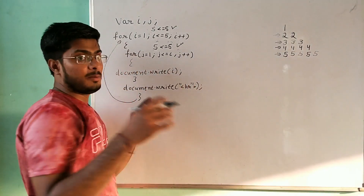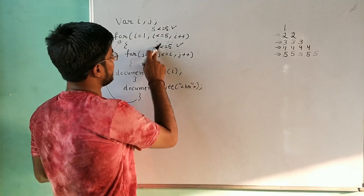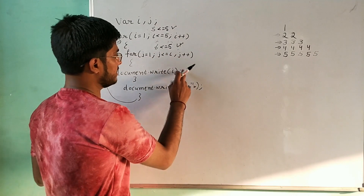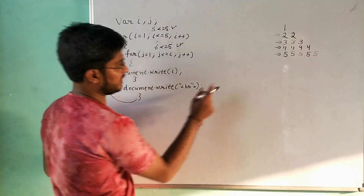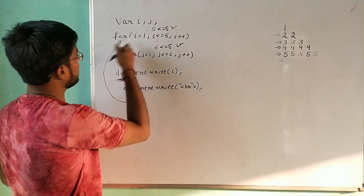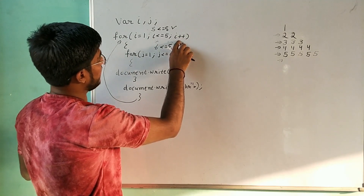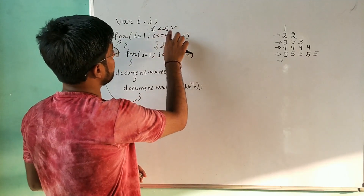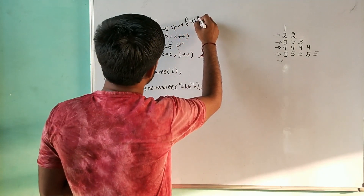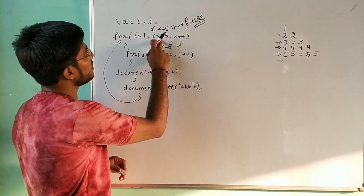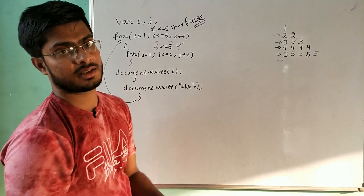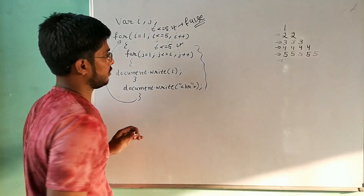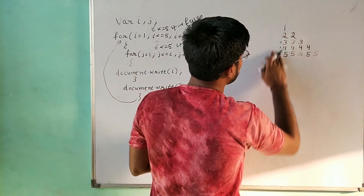j increments to 6. Is 6 less than equals to 5? No — condition is false. It goes outside the loop and inserts a newline. Then i increments to 6. Is 6 less than equals to 5? No — condition is false. All loops terminate. The program is done — this is our complete number pattern made in JavaScript.